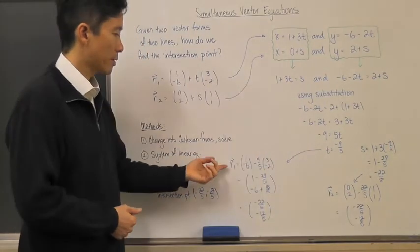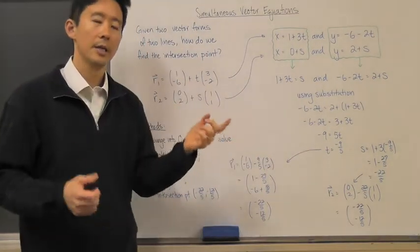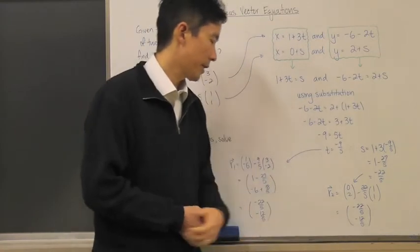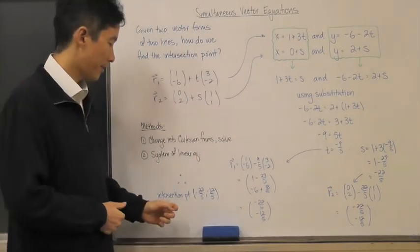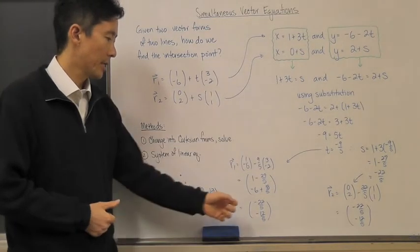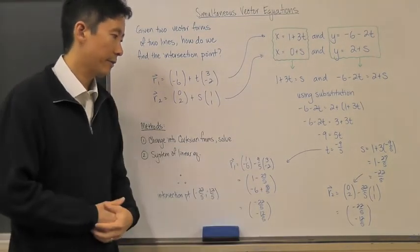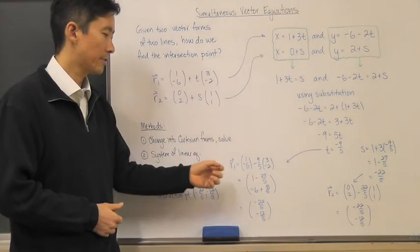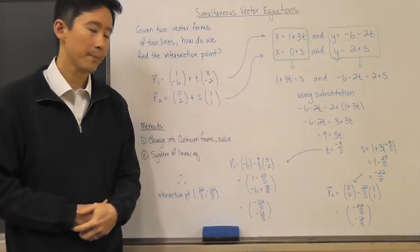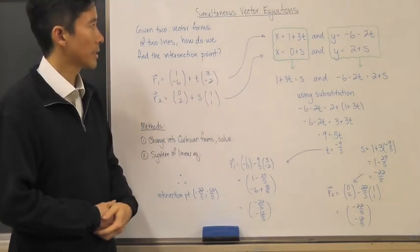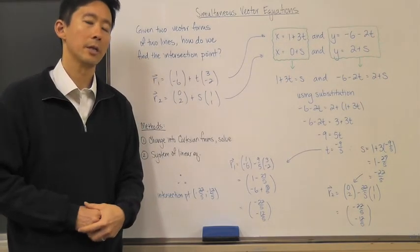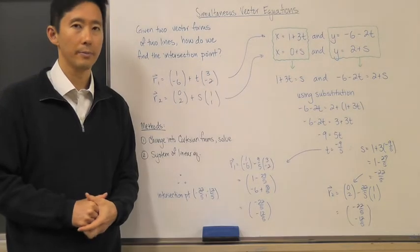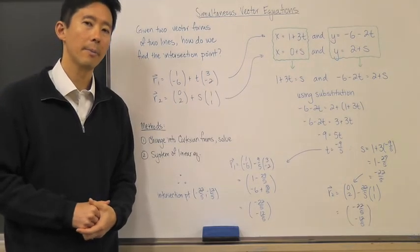Substitute those parameters back into the respective lines. What we should find is that those vectors are actually equal to each other, and therefore the intersection point are those vector values because these vectors are in standard position. That's how we solve simultaneous vector equations. We'll take a look at some examples in class. Take care, bye bye.